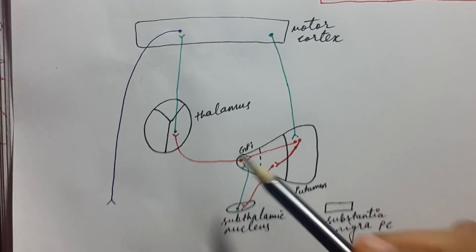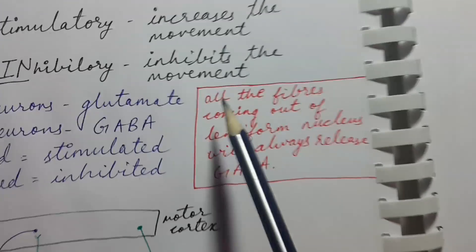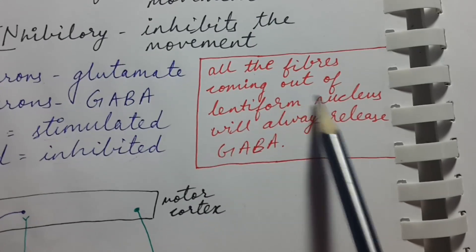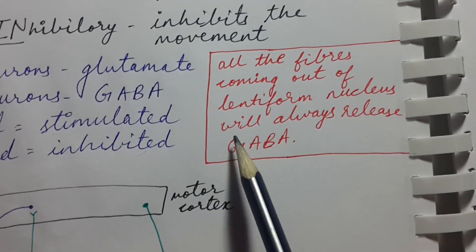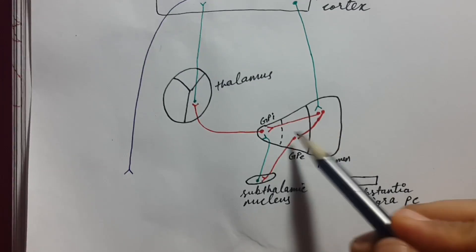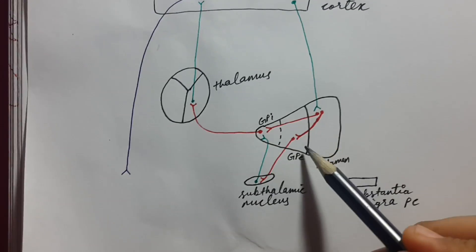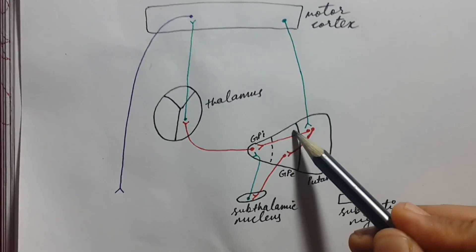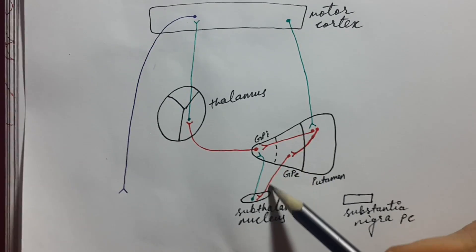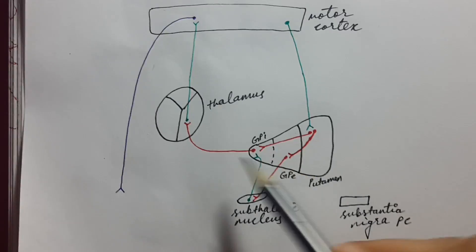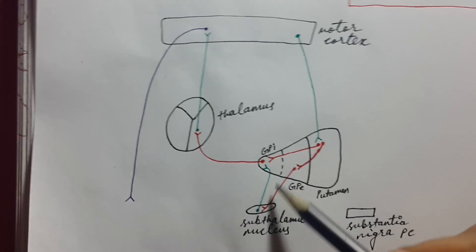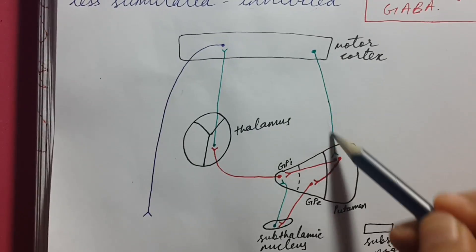An important rule: all neurons coming out of the lentiform nucleus always release GABA. One fiber comes out from the putamen, one from globus pallidus externus, and one from globus pallidus internus. All remaining neurons in the circuit are excitatory.